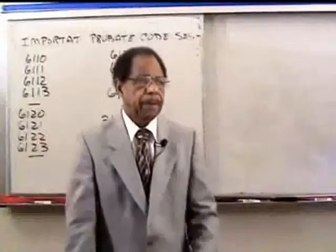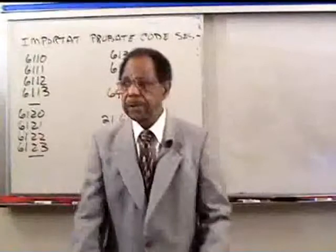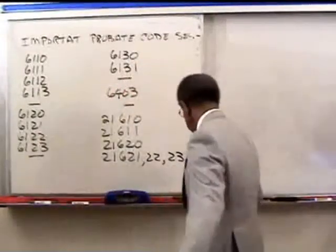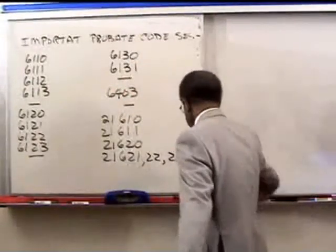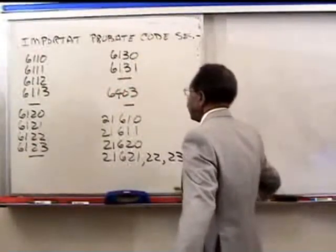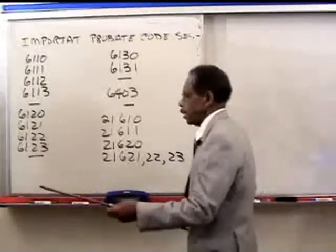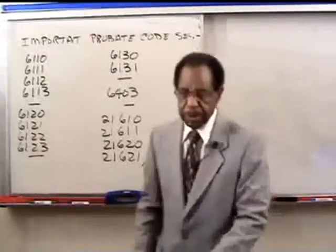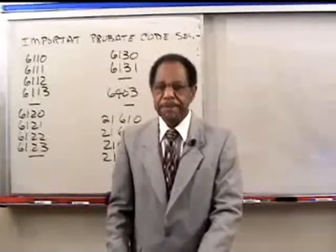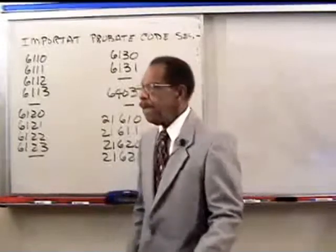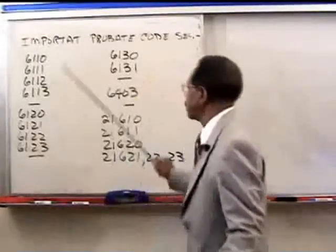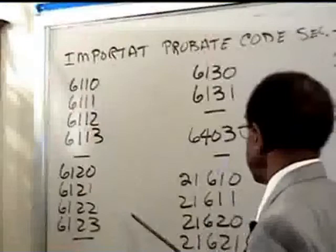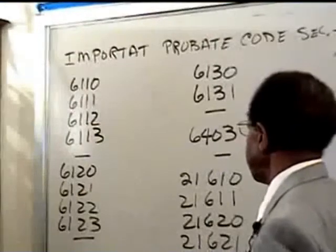On the board are a list of sections from the probate code which are quite important. Please take a look at these. These probate codes are in your three-ring binder and these are the most frequently tested sections of the probate code, so please be sure to take a look at those.